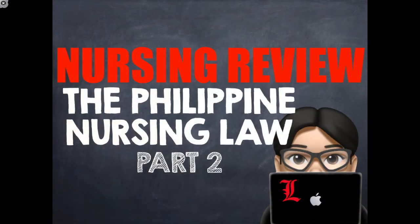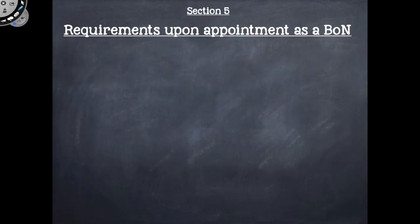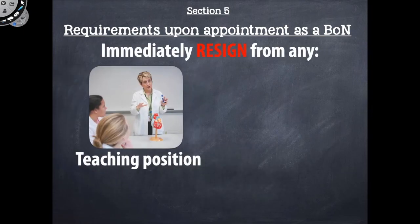This is Part 2 of the RA-9173 Law Lecture. Now if a person is appointed as a member of the BON, considering that they will conduct the National Licensure Examination for Nurses, they are required by the law to immediately resign from any teaching positions. If for example the appointee is the dean of a certain college, she must resign. If the appointee is teaching in any BSN program or any review program for the local board exams, then she must resign as well.